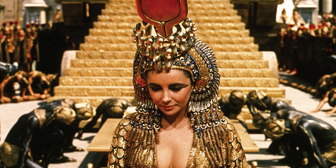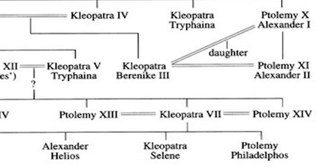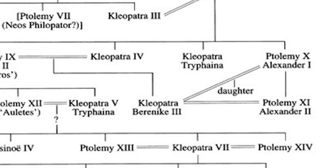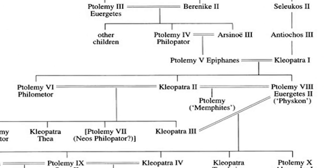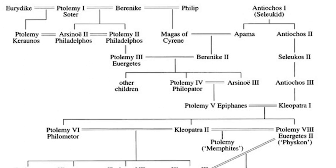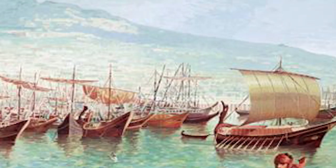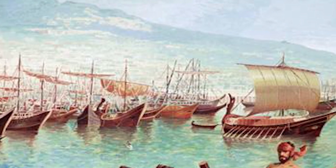We all know a very famous member of this dynasty: Queen Cleopatra. She was the last Ptolemaic ruler. Her great-grandfathers were Macedonians, but they were kings of Egypt, so Egypt was ruled by a Macedonian dynasty for centuries.